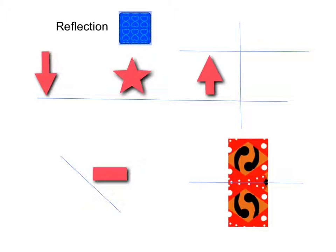Now I'm going to reflect this arrow here. I just reflected that arrow and now I'm going to reflect the star.